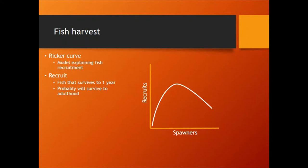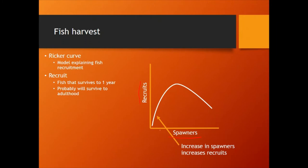Let's change gears and think about fish harvest. We use a Ricker curve to model how fish harvest works. What you have is a line of spawners — basically how many adults — versus how many recruits you get. A recruit is a fish that survives to one year, and generally if a fish survives one year, it'll eventually probably survive to adulthood. Not surprisingly, the more spawners you have, the more recruits you get, so you get this increasing line.